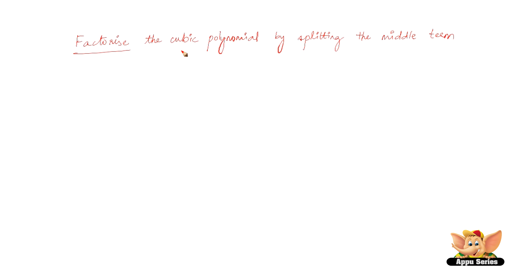Let us see how to factorize a cubic polynomial by splitting the middle term. Let us consider the expression p(x) = x³ - 3x² - 9x - 5.